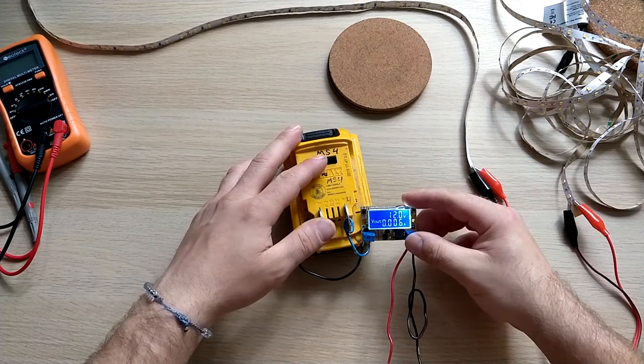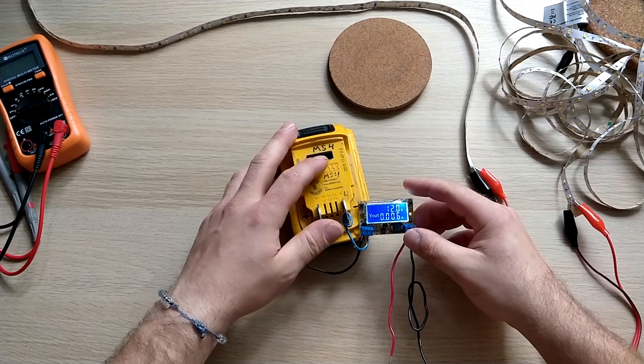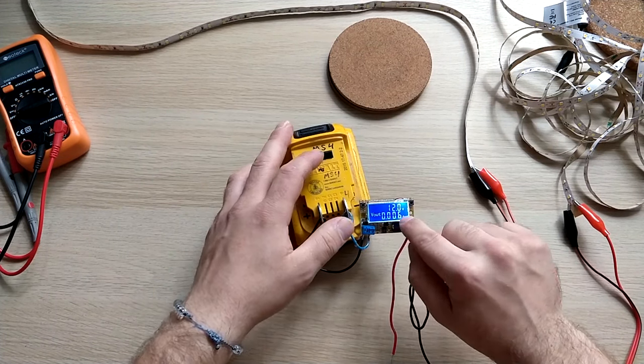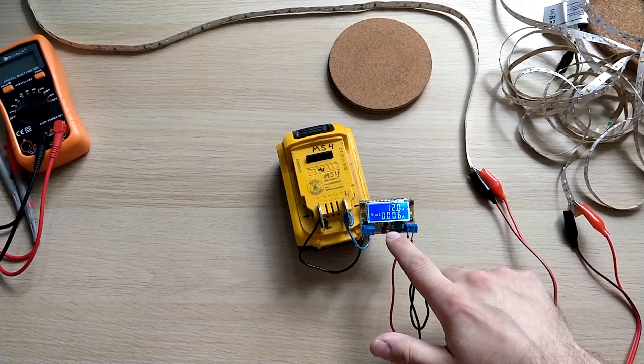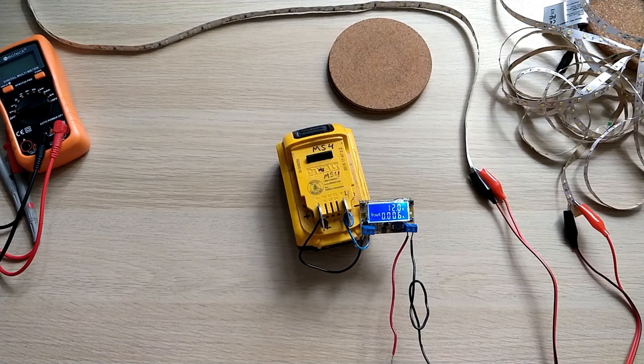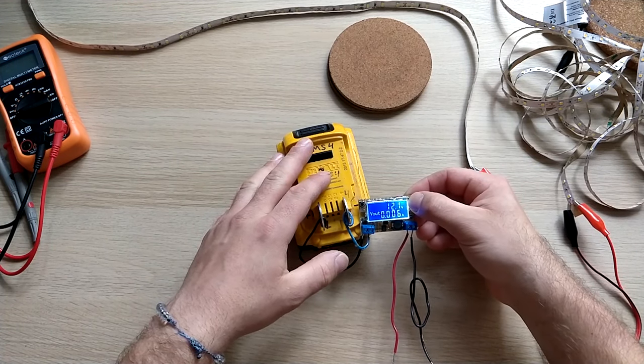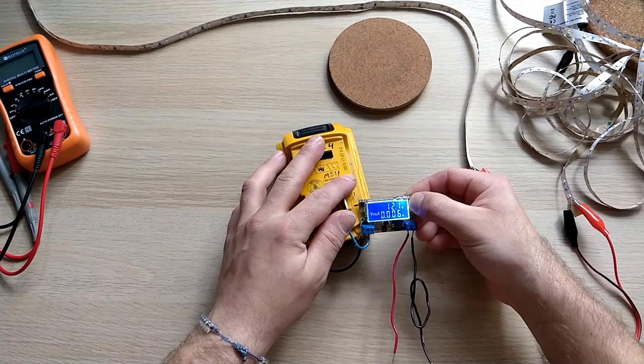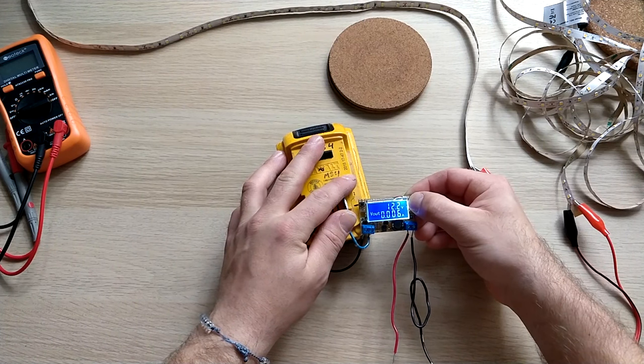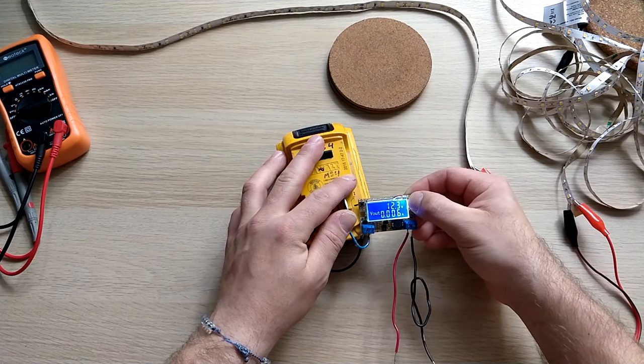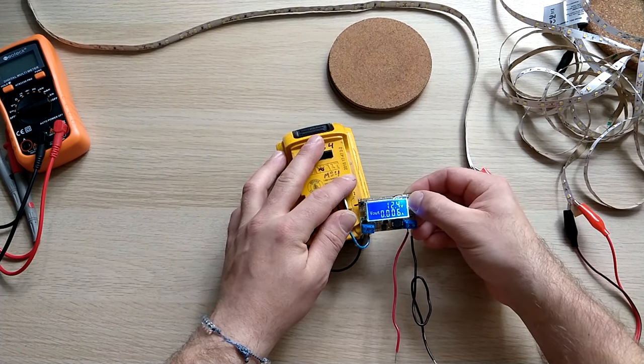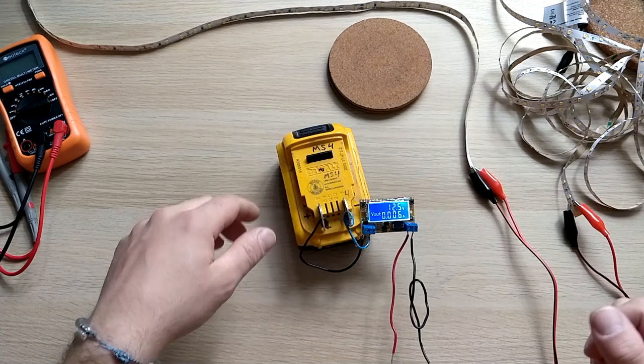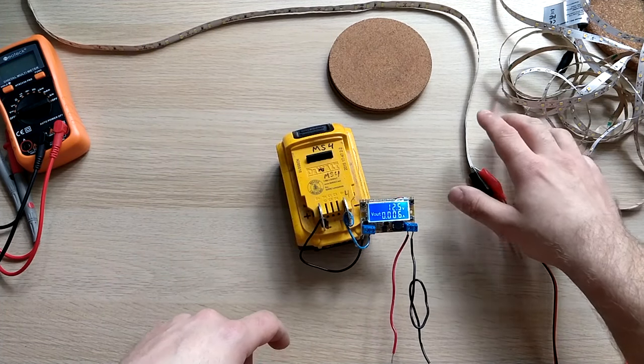As you see, now it's 12 volts and I guess all the electronic components and everything is drawing 0.006 of an amp. Now let's increase this to let's say 12.5 and we'll see how much is drawing on a two-foot strip, and then we'll test the five-meter strip.